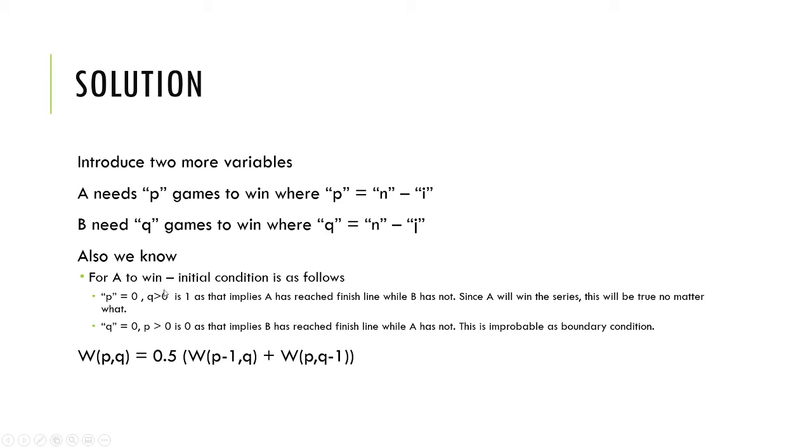The initial condition I haven't quite mentioned here, but this really is the probability. Probability is 1, probability is 0. Now we set up a winning function—this is the probability function and it works on p and q.